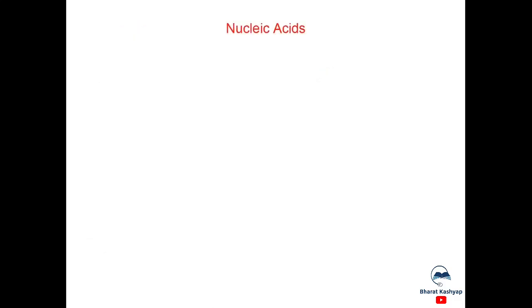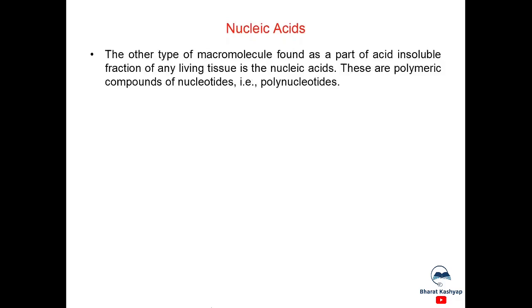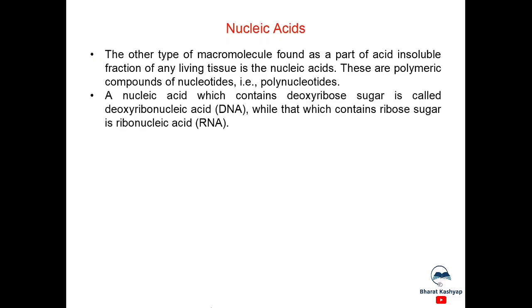And now, nucleic acids. The other type of macromolecule found as a part of acid insoluble fraction of any living tissue is the nucleic acids. These are polymeric compounds of nucleotides that is polynucleotides. A nucleic acid which contains deoxyribose sugar is called deoxyribonucleic acid, while that which contains ribose sugar is called ribonucleic acid.